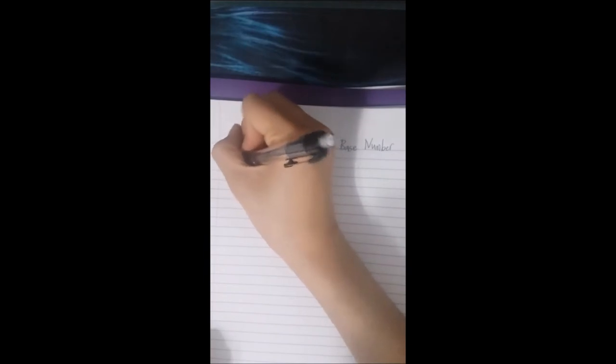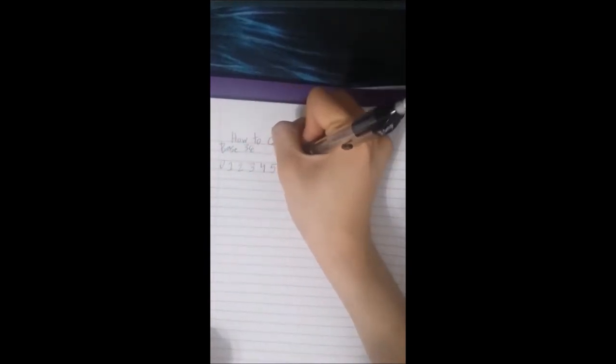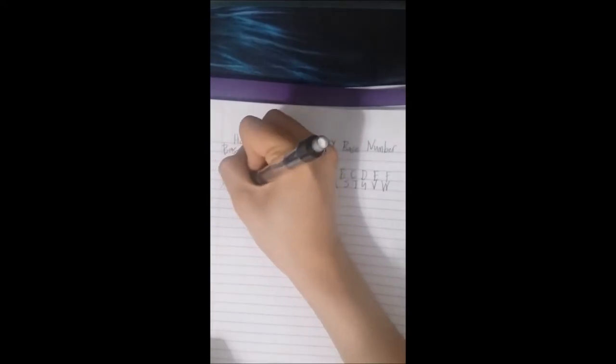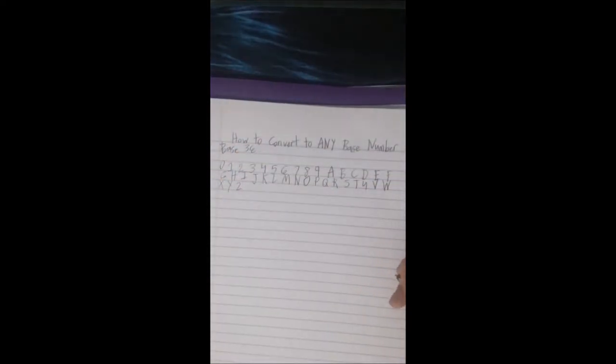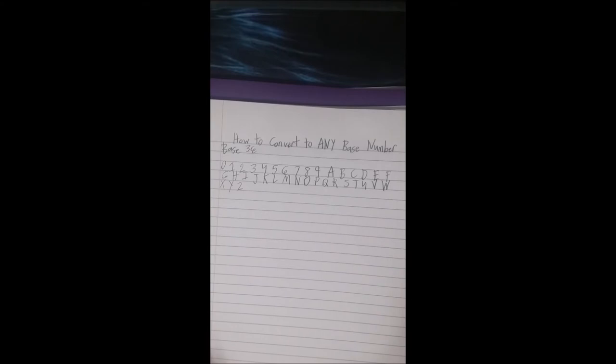They are 0, 1, 2, 3, 4, 5, 6, Y, and Z. Now if you can tell, that's a lot of digits.